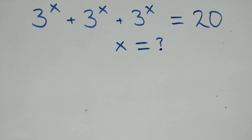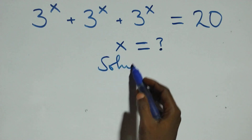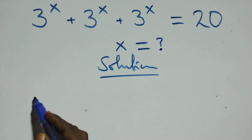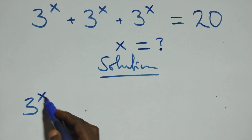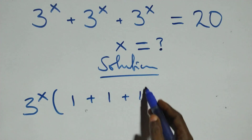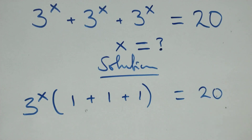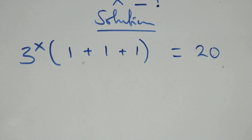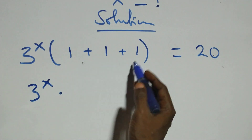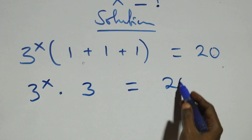Hello, welcome. Here's how to solve this nice exponential equation. What we have here is 3 raised to the power x, plus 3 raised to the power x, plus 3 raised to the power x, in brackets with 1 plus 1 plus 1, equals 20 on this side. The next step: we have 3 raised to power x times (1 plus 1 plus 1), that's 3, equals 20.